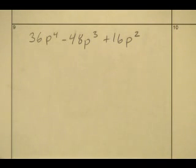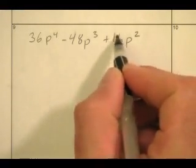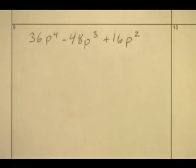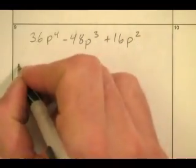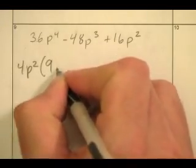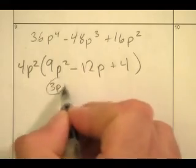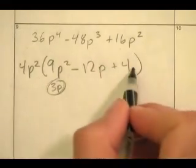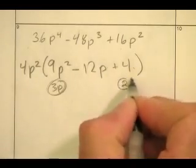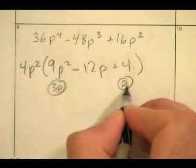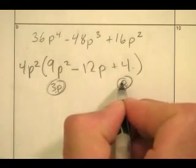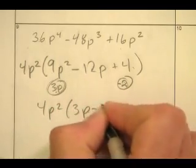Here we have squares everywhere. First, factor out the greatest common factor. I can take out 4 and p squared — I want to keep perfect squares inside, so taking out 4p² is ideal. That leaves 9p² minus 12p plus 4. Is 9p² a square? Yes, root is 3p. Is 4 a square? Yes, root is 2. Is 12p twice the product of 3p and 2? 3p times 2 is 6p; doubled is 12p — yes. So the answer is 4p²(3p minus 2)². Double-check: (3p-2)(3p-2) gives 9p² minus 6p minus 6p plus 4 — yes, 9p² minus 12p plus 4. It works.